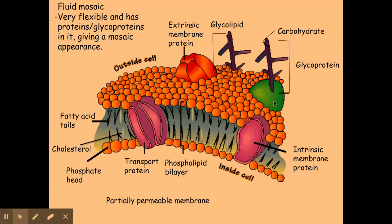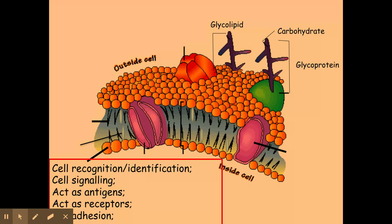The first component we're going to look at is the glycoproteins and the glycolipids. As you can see, they both contain carbohydrate chains, which are the purple stick-looking things here. A glycoprotein is a carbohydrate attached to a protein, and a glycolipid is a carbohydrate attached to a phospholipid. They both have very similar roles: they're involved with cell recognition and identification, cell signaling, they act as antigens, they act as receptors, and they're involved with cell adhesion where cells may need to bind to each other to create a structure.